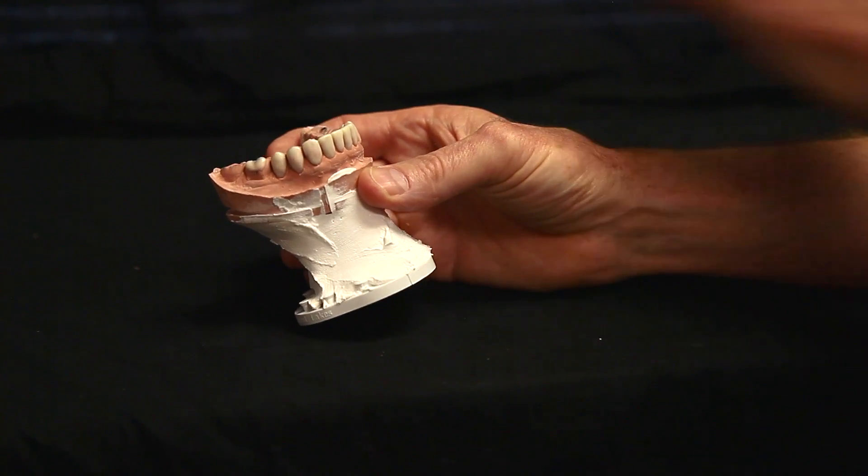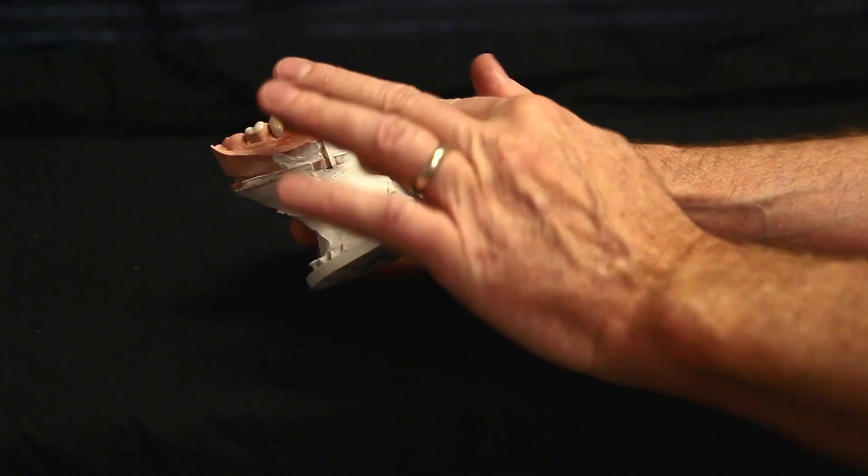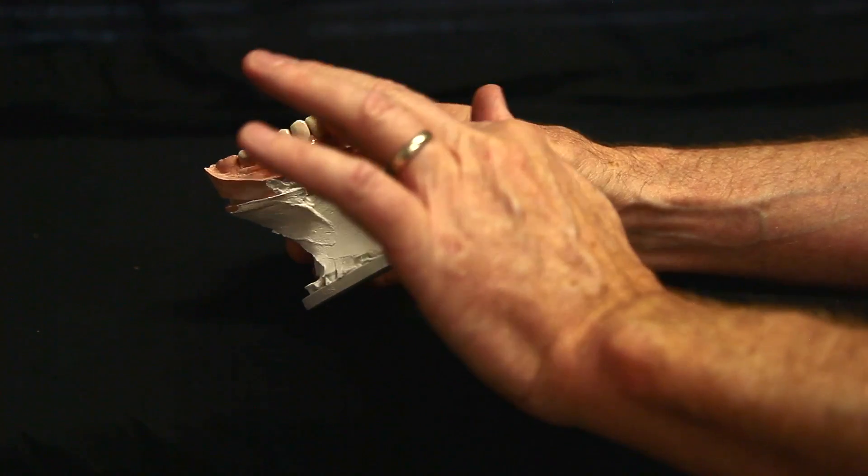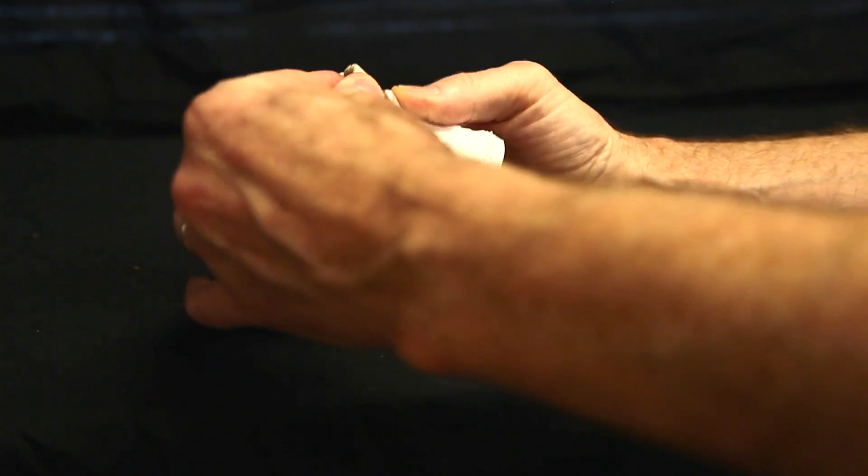First, you want to do is I've found if you just lubricate the wax very slightly, and this material is neystone dilube, it'll prevent plucking of the wax-up and the wax when you're taking your fabricated matrix off.